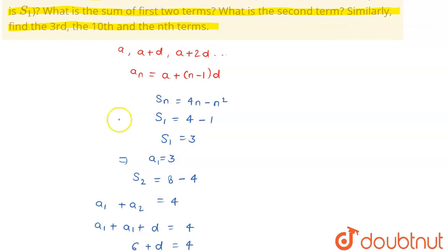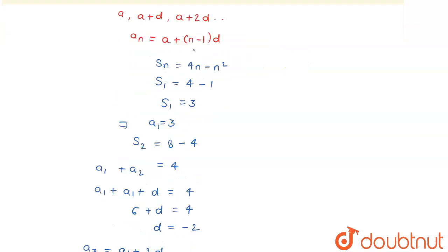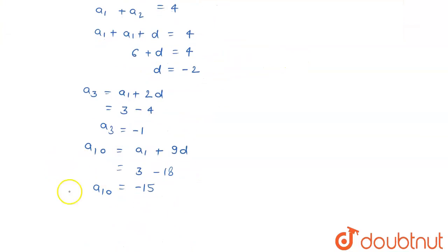Now at last I have to find out the nth term. The nth term similarly will be, for this particular scenario, a1 which is 3 plus (n minus 1) into d which is minus 2. You can simplify it, it becomes 3 plus...